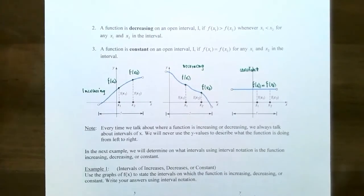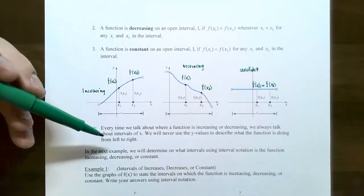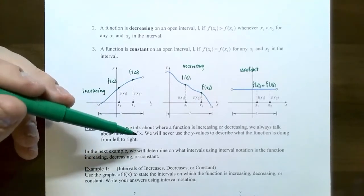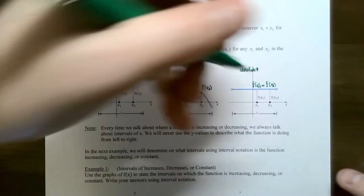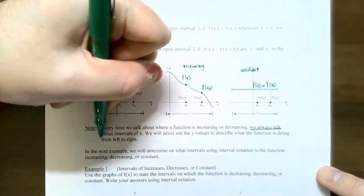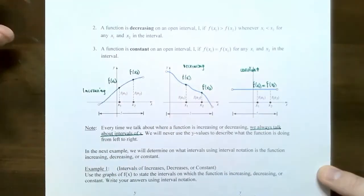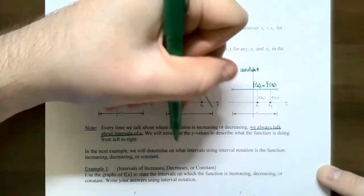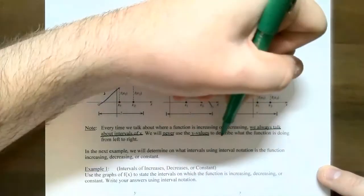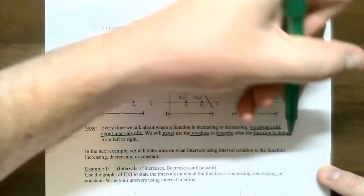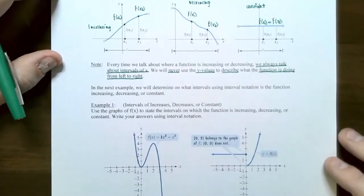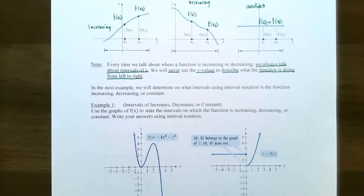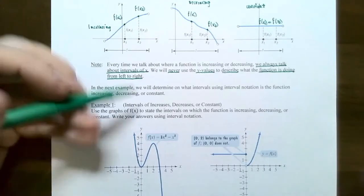One important note: every time you describe increasing, decreasing, or constant, you are always referring to the x-values. You always use x-values for increasing, decreasing, and constant intervals. You never use the y-values to describe where a function is increasing, decreasing, or constant. Write the answers using interval notation.